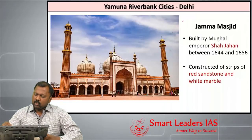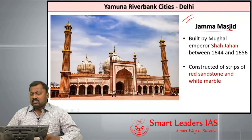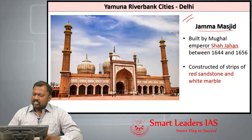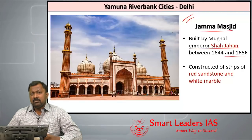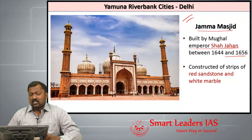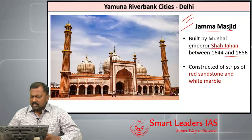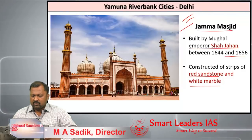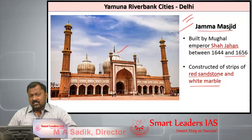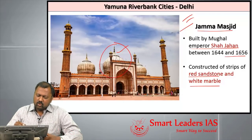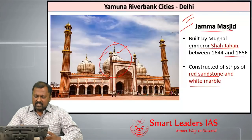Another important monument is Jama Masjid, a mosque built by Emperor Shahjahan between 1644 and 1656. It is the biggest mosque in the whole of India — at one sitting, 35,000 people can pray here. It is built using red sandstone and white marble. The dome of Jama Masjid, also seen on the Taj Mahal, is a developed form called a bulbous dome.